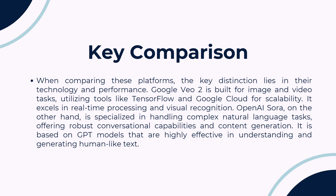On the other hand, OpenAI Sora is powered by the GPT architecture, designed specifically for text and language tasks. It's highly effective in understanding and generating human-like text, making it the go-to platform for natural language processing.